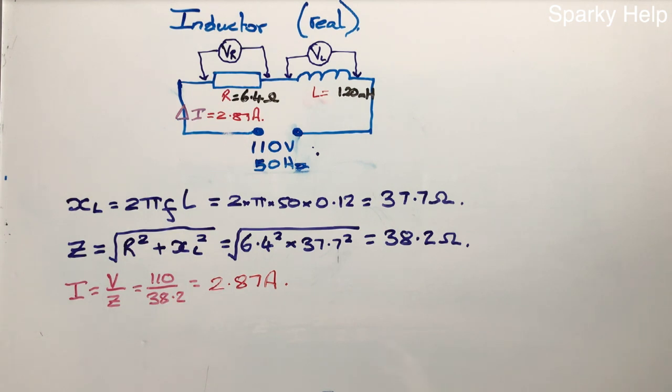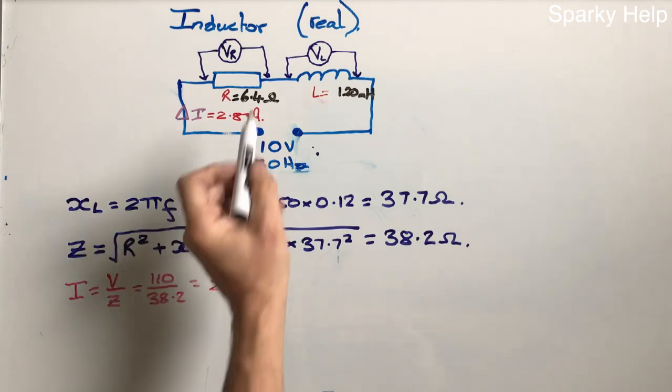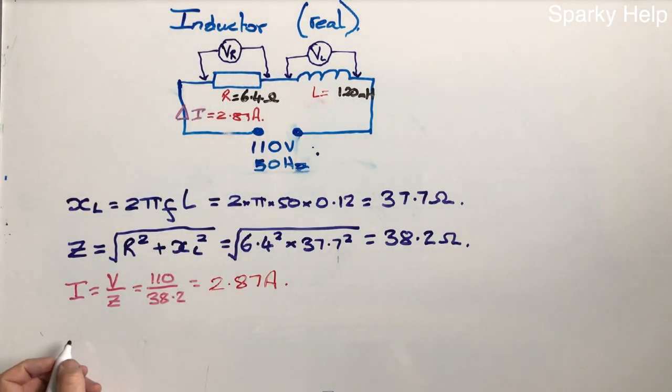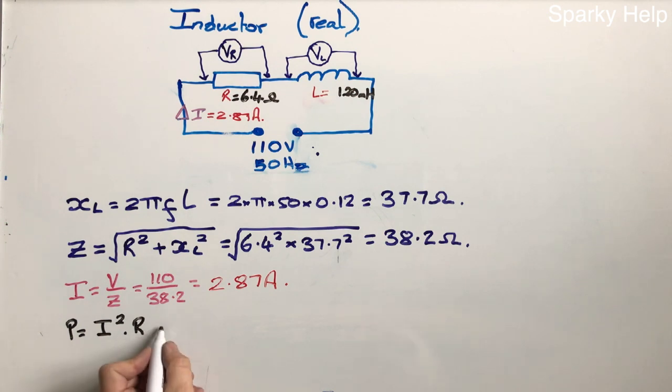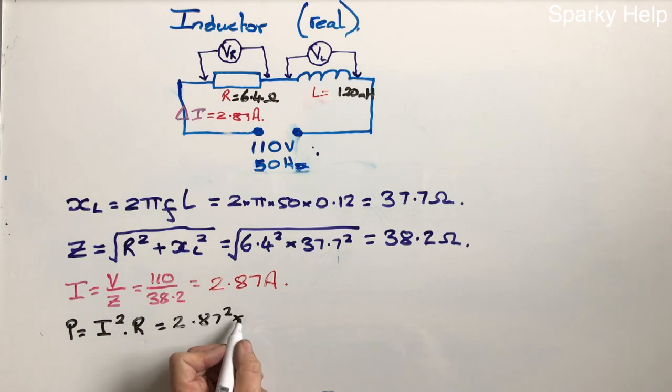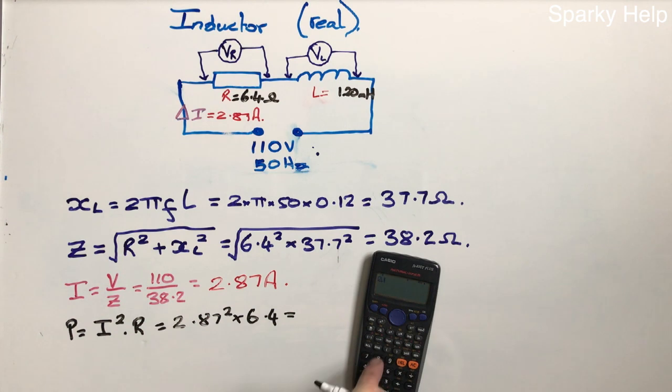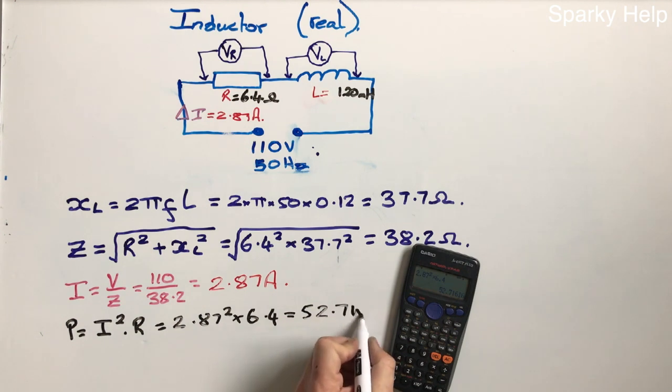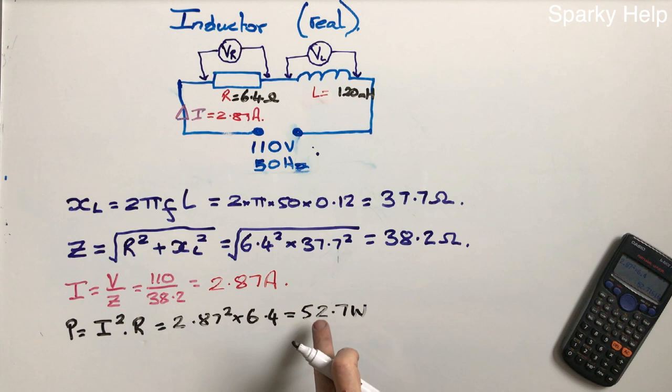Now we can work out the power for this circuit. Whenever I'm working out power of something, remember this doesn't use any power whatsoever. This is the only bit that does, and it's the resistance of the wire itself. So if it gets warm, this is why, because power equals, and the formula I always tend to go for, is I squared times R. So now we can do that. It's 2.87 squared times the resistance, which is 6.4. So, trusty calculator, 2.87 squared times 6.4, and we get 52.7, and this is in watts. So the total power for this circuit is 52.7 watts for this particular circuit.